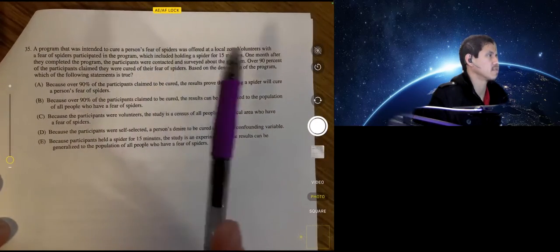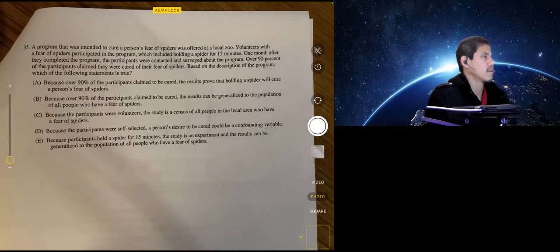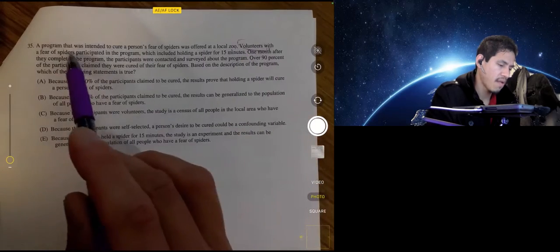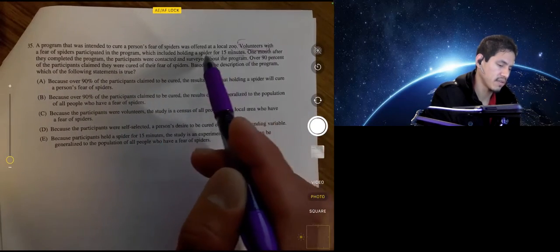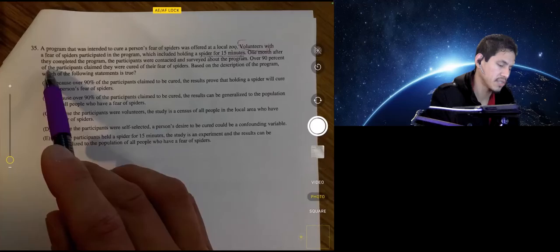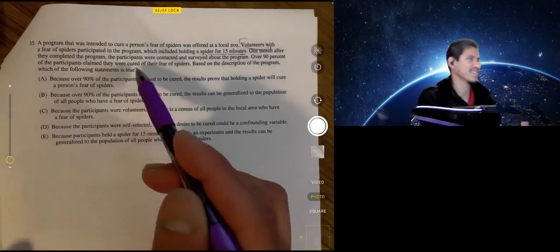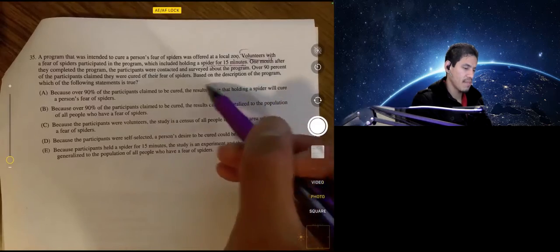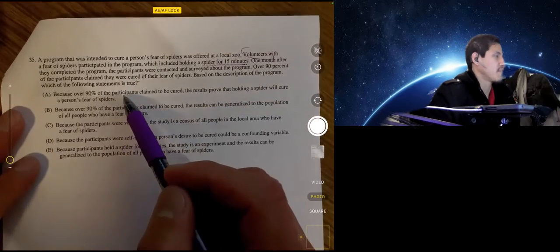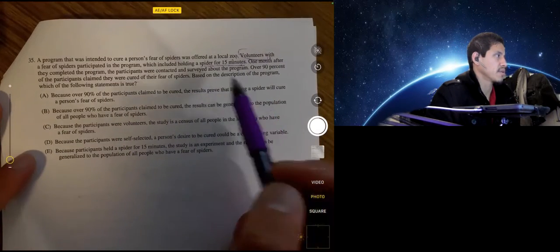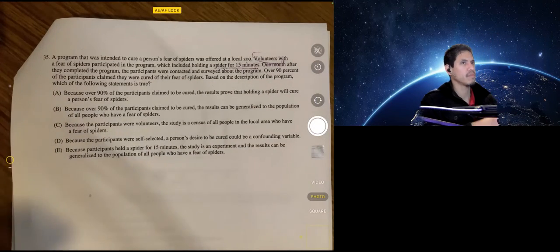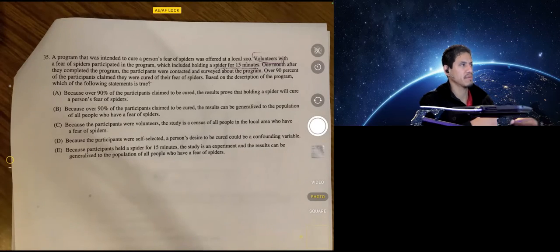So, in 35, a program that was intended to cure a person's fear of spiders was offered at a local zoo. Volunteers with the fear of spiders participate in the program, which included holding a spider for 15 minutes. That doesn't sound fun. One month after they completed the program, the participants were contacted and surveyed about the program. Over 90% of the participants claimed they were cured of their fear of spiders. That's amazing. Based on the description of the program, which of the following statements is true? Because over 90% of the participants claimed to be cured, the results prove that holding a spider will cure a person's fear of spiders. No. To prove something, you have to do an experiment. An experiment was not done. So, it's not going to be A.